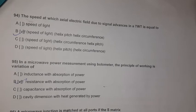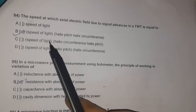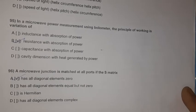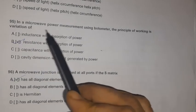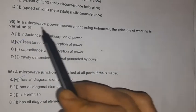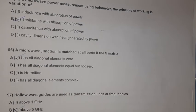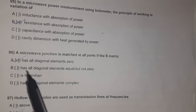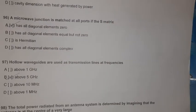Question 92: The speed at which the axial electric field due to a signal advances in a TWT is equal to the speed of light × (helix pitch / helix circumference). Question 93: In a microwave power measurement using a bolometer, the principle of working is the variation of resistance with absorption of power.